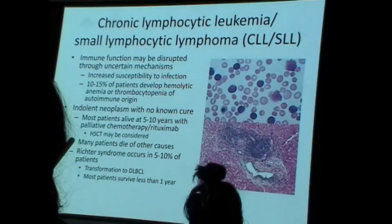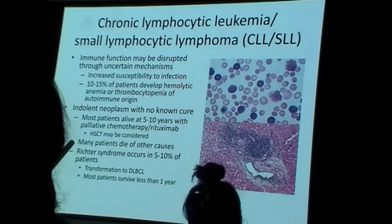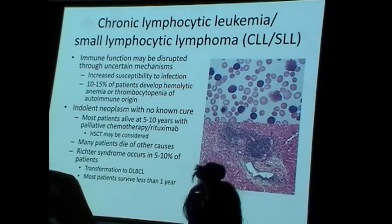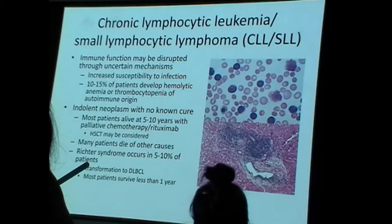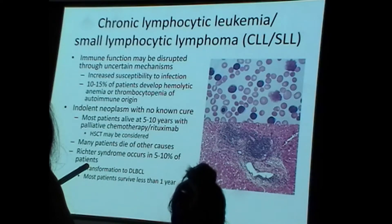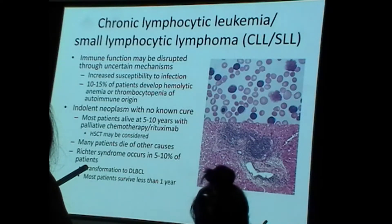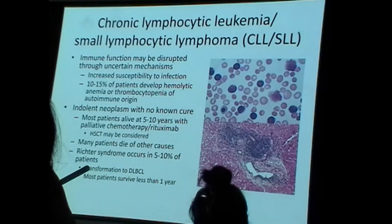Individuals with CLL frequently have some degree of immunocompromise and increased susceptibility to infection. For some individuals, a hematopoietic stem cell transplant might be considered. Curative intent is not really what is pursued in treatment. There does exist something known as Richter's syndrome — in a small percentage of patients, CLL can progress and transform to a higher-grade, more aggressive lymphoma: diffuse large B-cell lymphoma.